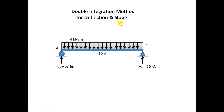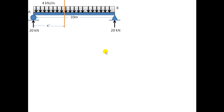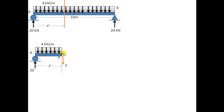Hello viewers. In this video I will explain how we can find the slope and deflection by using the double integration method when the UDL is acting over a 10-meter span on a simply supported beam. These are the reactions for this UDL for this type of beam. I will cut it from here and make the equation of the moment, taking the shear force downward and moment as counterclockwise, since we have cut it from the left side taking the x distance from the left side.